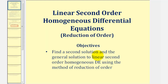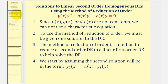Welcome to a lesson on how to find a second solution and the general solution to a linear second order homogeneous differential equation using the method of reduction of order. A differential equation must fit this form if it is a linear second order homogeneous differential equation. Since p of x, q of x, and r of x — the coefficients — are not going to be constants, we cannot use a characteristic equation to solve the differential equation.